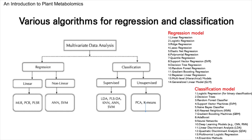Metabolomics often involves analyzing complex multivariate data, typically using regression and classification techniques. Let's start with linear regression, a simple yet effective tool, much like a basic ruler. It draws a straight line that best fits our data points on a graph, ideal for straightforward relationships. However, when our data becomes more intricate with non-linear patterns, we turn to more sophisticated options like artificial neural networks or support vector regression.